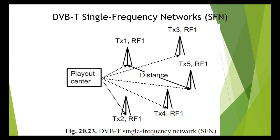The COFDM is well suited to single frequency operation. As the name indicates, in single frequency operation all transmitters operate on the same frequency, which makes for a greater economy with regard to frequency resources. All transmitters radiate the identical signal and they have to operate in complete synchronization with each other. Signals from adjacent transmitters are seen by a receiver as if they were simply echoes.